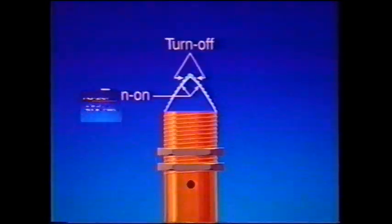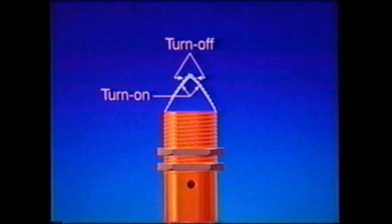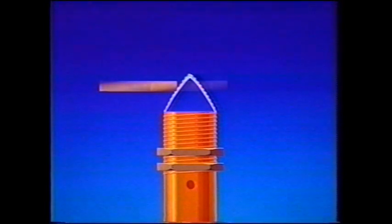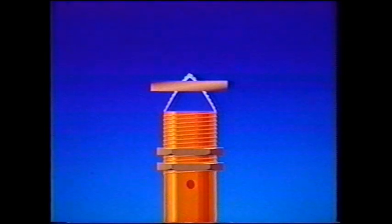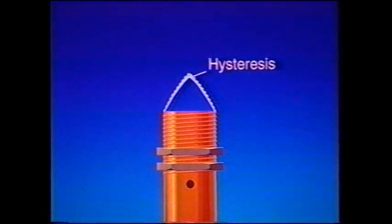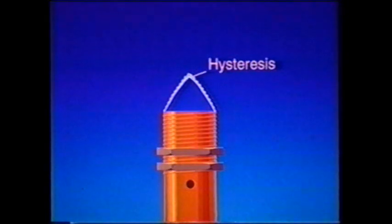Proximity switches have a specified nominal sensing range determined by a standard test procedure. Under these test conditions, a 30-millimeter cylindrical switch has a turn-on and turn-off graph. The inside solid line designates where the switch will turn on as the target approaches. The outside broken line shows where the switch will turn off as the target passes the switch. The difference between turn-on and turn-off, or hysteresis, provides stable operation by preventing the switch from chattering between the on and off states.